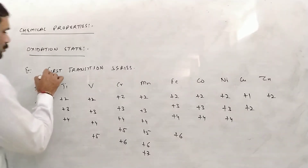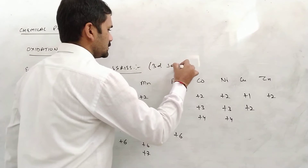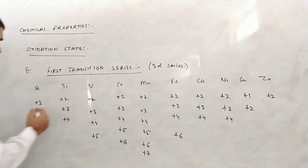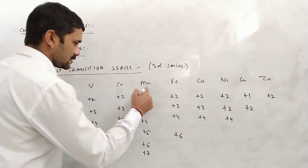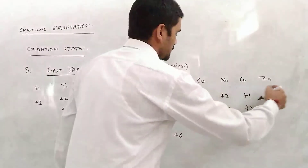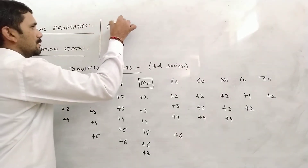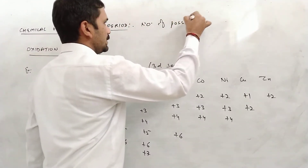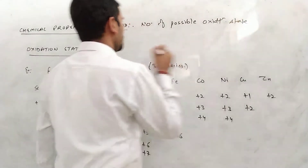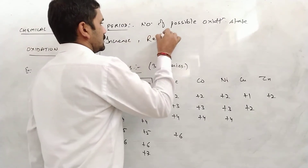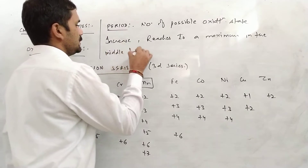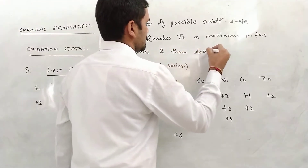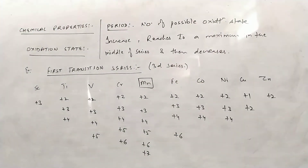These are the different oxidation states shown by elements of the first transition series, or 3D series. From this table, one important observation is that as we move across the period, the number of oxidation states first increases, reaches a maximum in the middle of the series, and then decreases. So variation in the period: number of possible oxidation states increase, reach a maximum in the middle of series, and then decrease.